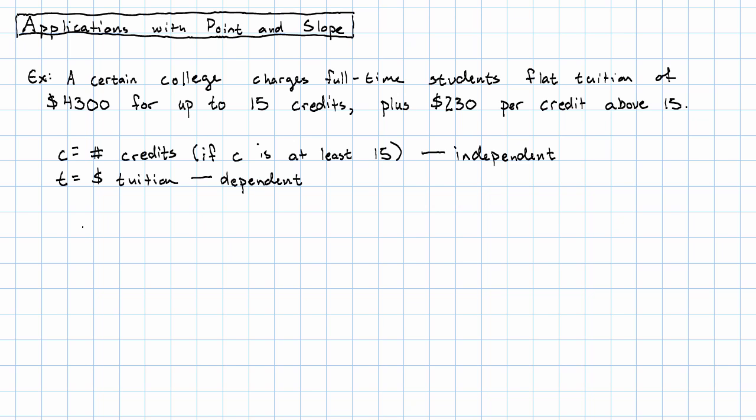So let's just take a look at some values here. If c is 15, the tuition will be $4,300. And then, every time we add 1 to c, we'll add 230 to t. So that'll be 4530 if we go up to 16 credits.